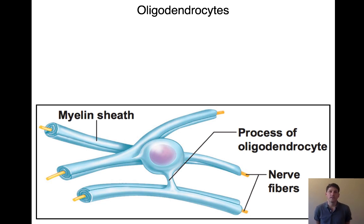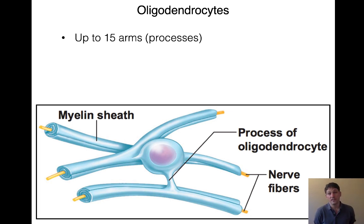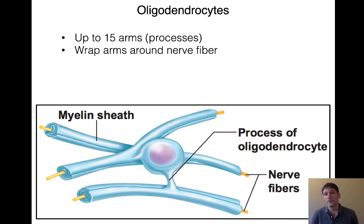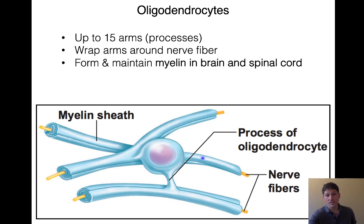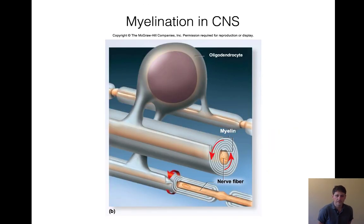Then we have our oligodendrocytes. These can branch and have up to 15 different arms that wrap around nerve fibers. One oligodendrocyte reaches out, branches, and wraps around each of multiple nerve fibers — creating insulation and myelin in the brain and spinal cord. Oligodendrocytes are found in the central nervous system.